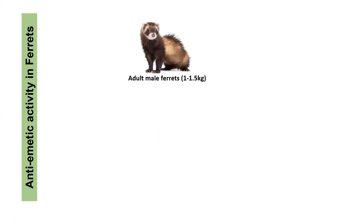The ferret is a very suitable model. This animal uses responses similar to the human being. This model is used to test the anti-emetic properties of drugs which block the 5-HT receptor — that is 5-HT receptor antagonists — and tachykinin NK receptor antagonists.